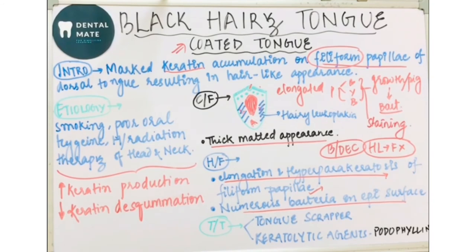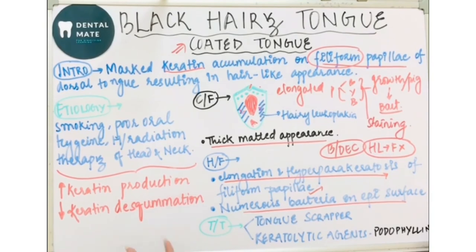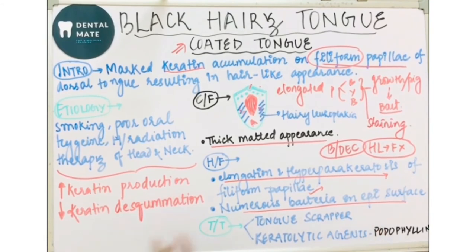Talking about the treatment: we have to give symptomatic treatment using a tongue scraper, so that whatever keratin, desquamated epithelial cells, or bacteria are present, they will be scraped out from the tongue — helping with gag reflex or bad taste complaints. Along with this, keratolytic agents like podophylline can also be given.